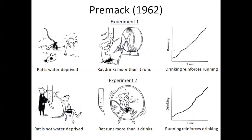In a second experiment, Premack used rats that weren't water-deprived. Those rats chose to spend most of their time during baseline running instead of drinking, so running was the more probable behavior. Premack found that drinking did not reinforce running — if rats had to run before they could drink, that didn't increase their running. But running could reinforce drinking: for these non-water-deprived rats, running was the more valuable behavior, so if they had to drink before they could run, they would do more drinking so they could do more running.